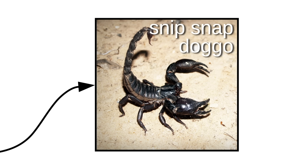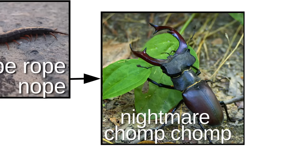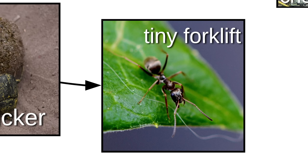There are many more bugs, like the Snip Snap Doggo, Nope Rope Nope, and Nightmare Chomp Chomp. There's also the Crap Kicker, Tiny Forklift, and the Spicy Boys.